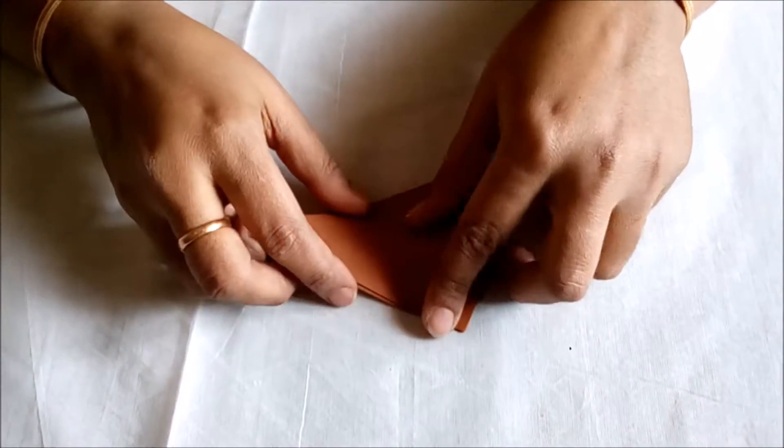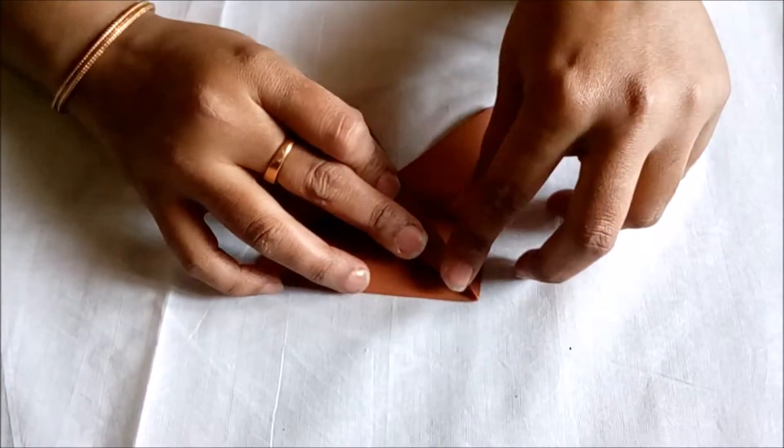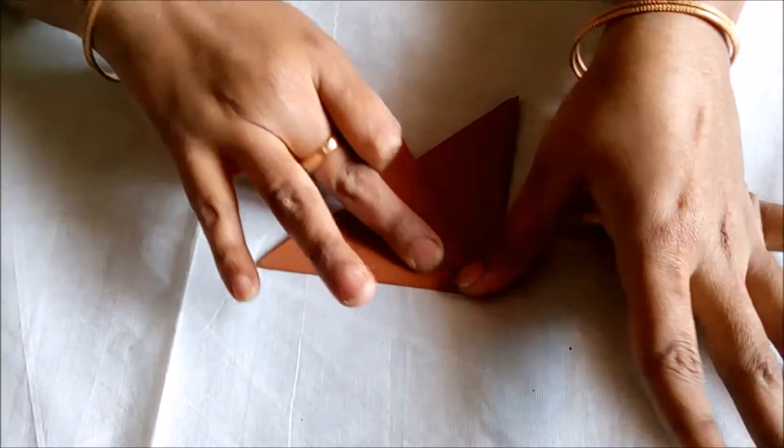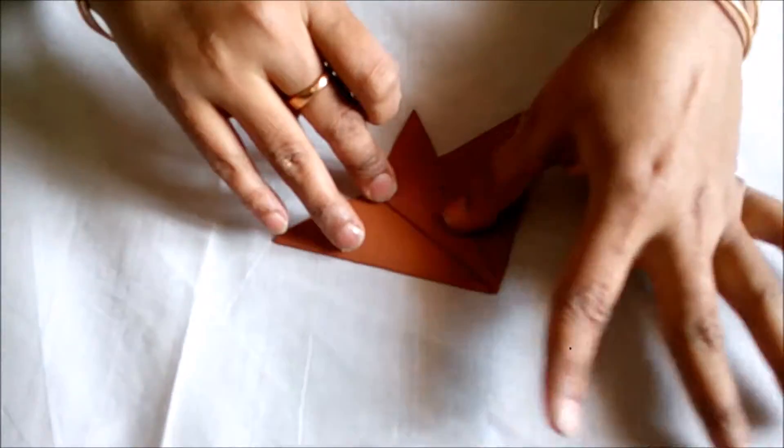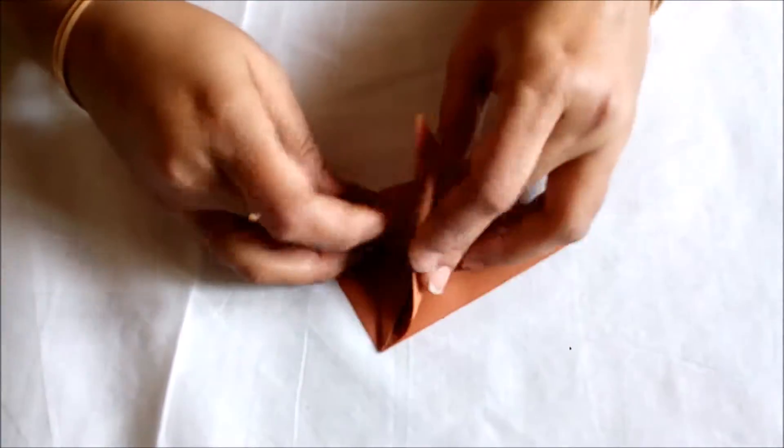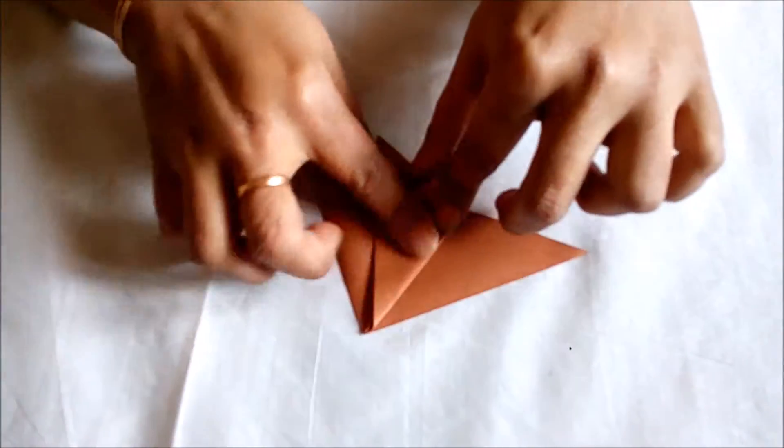Now I am going to make the fins of the fish. Fold the side one into the middle. If you notice, one fin is ready. Bring the other one onto this diagonally. So the other fin is also ready.